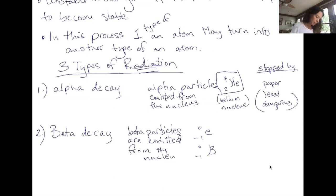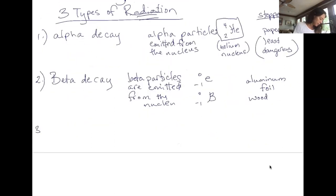It can be blocked by aluminum or wood. So it is more dangerous than alpha decay. However, it is not as dangerous as gamma rays.